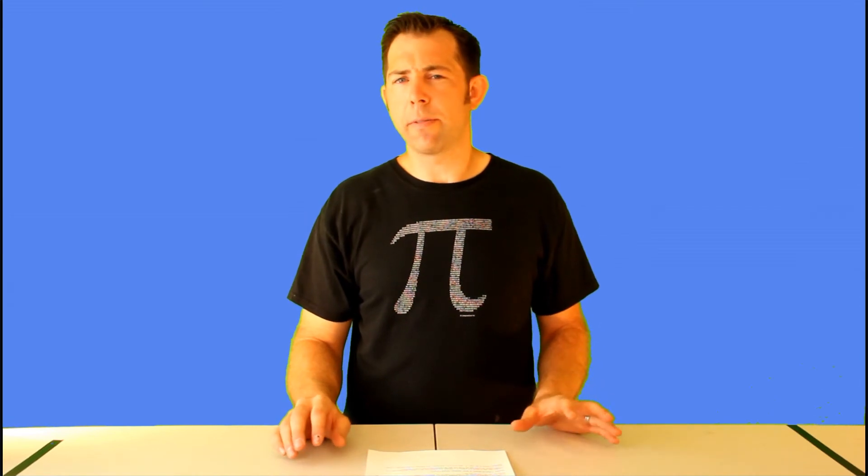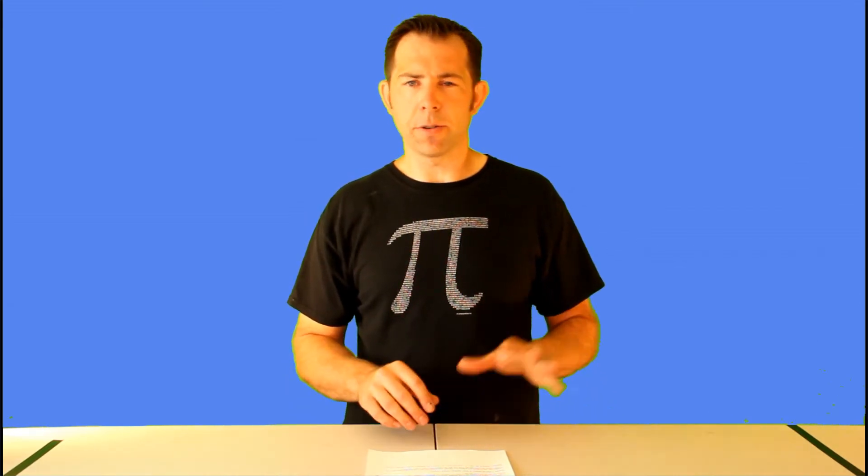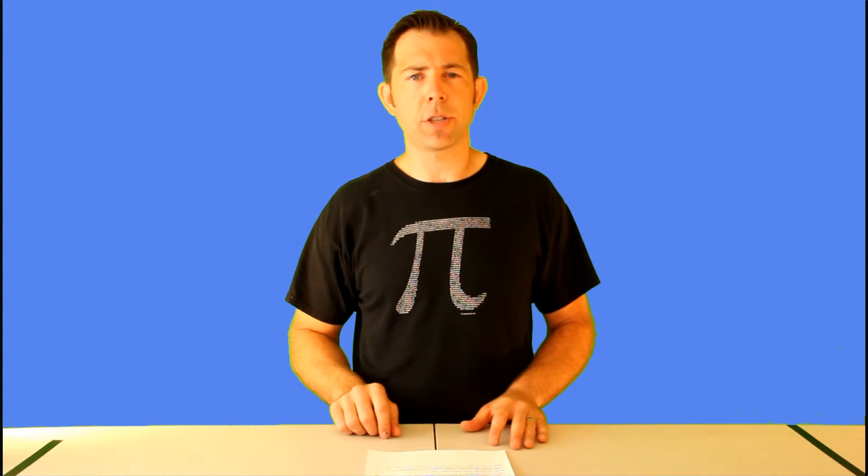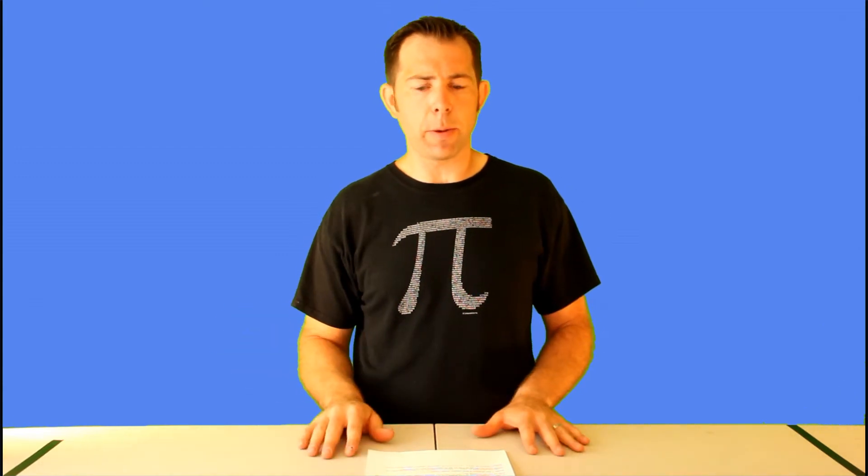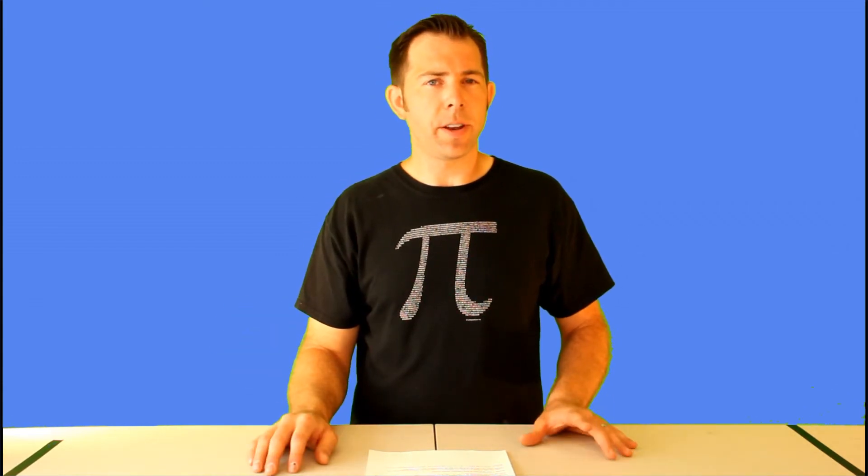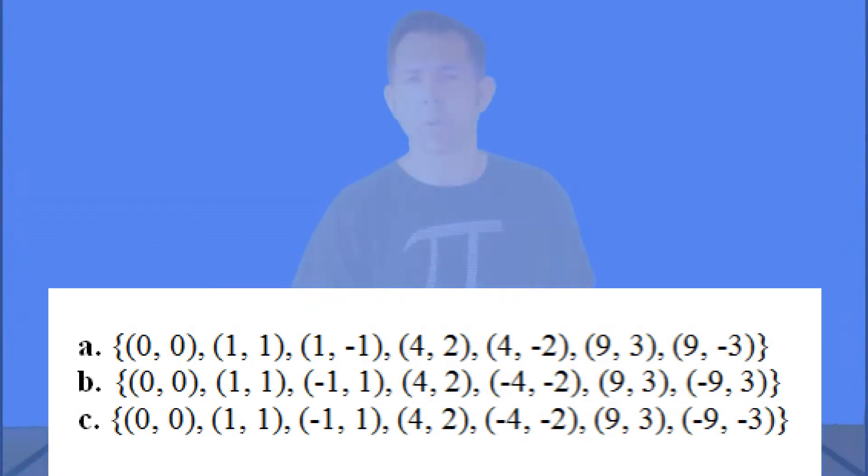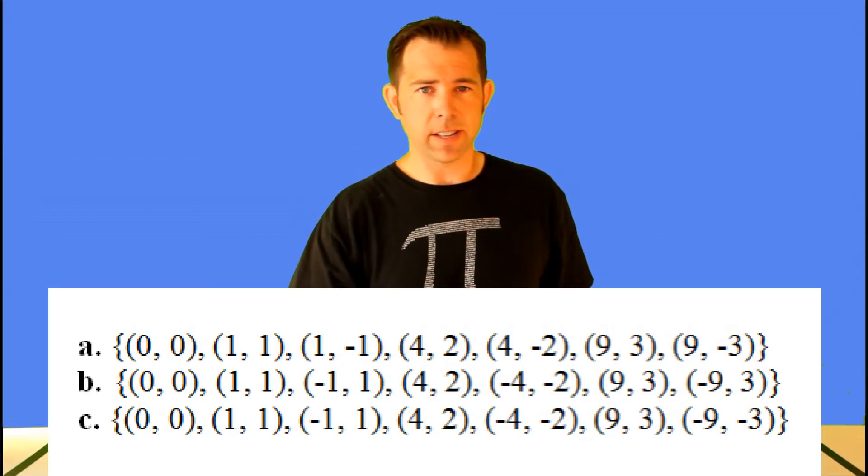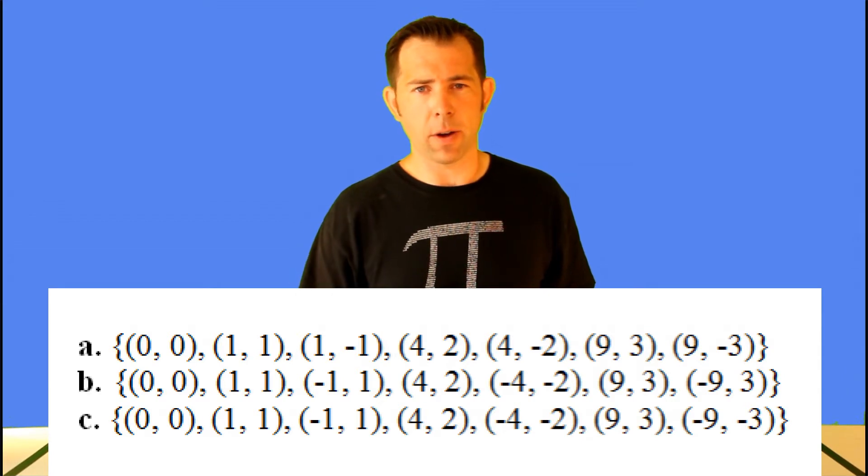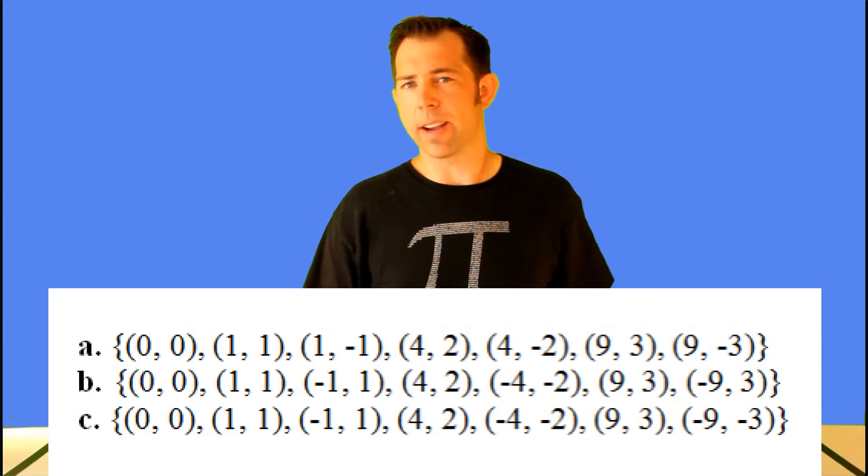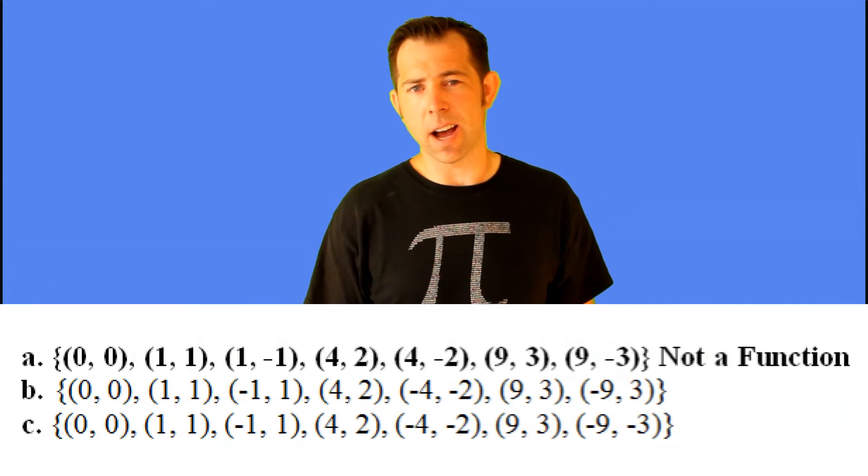Another easy way to determine if you have a function or not is simply look at all the x-values. So if you have a table or a set of ordered pairs, just look at all the x-values and see if you have any repeats. For example, pause the video and see if you can see which relation below is not a function. Notice on relation a, the value of one for x gets used twice. It's going to two different y-values. So that tells you right there that relation a is not a function.